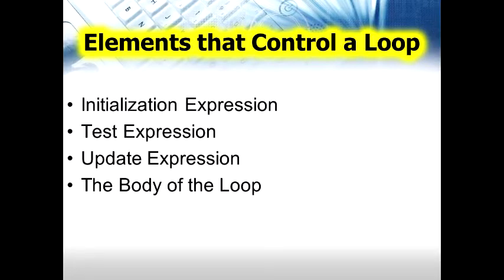Elements that control a loop. Every loop has elements that control and govern its execution. Generally, a loop has four elements that have different purposes: the initialization expression, the test expression, the update expression, and the body of the loop.